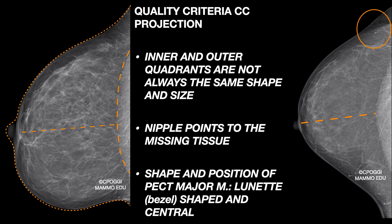But how do I distinguish this situation from an incorrect lateral-to-medial rotation of the breast? You should look at two aspects. First, the nipple points to the missing tissue — so if a medial rotation of the breast had really been performed, medial tissue would have been lost as a result, and as you can see, it is not. Second, and more importantly, look at the position of pectoralis major. If it is central, you can be sure the geometry of acquisition in the axial plane is correct — the chest wall is on a plane perpendicular to the mid-sagittal plane.